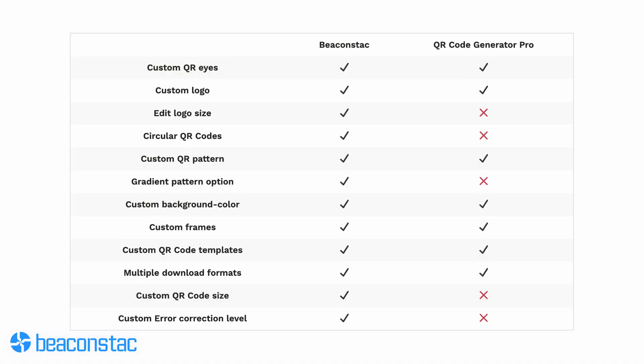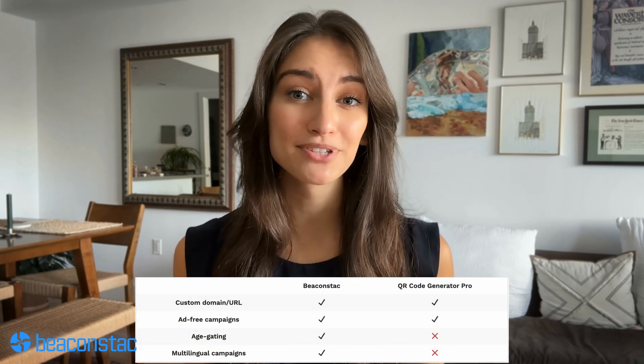It is critical to be able to customize QR code design in order to provide a consistent consumer experience for your brand. Beacon Stack QR code generator provides significantly more creative freedom with your QR code design than QR code generator pro. QR code generator pro lacks certain new-age features such as circular QR codes, gradient pattern options, custom size for your QR code, and custom error correction level — all of which Beacon Stack provides. While both QR code generators have custom URL and domain features, Beacon Stack is leaps ahead with features like age gating and multilingual campaigns.